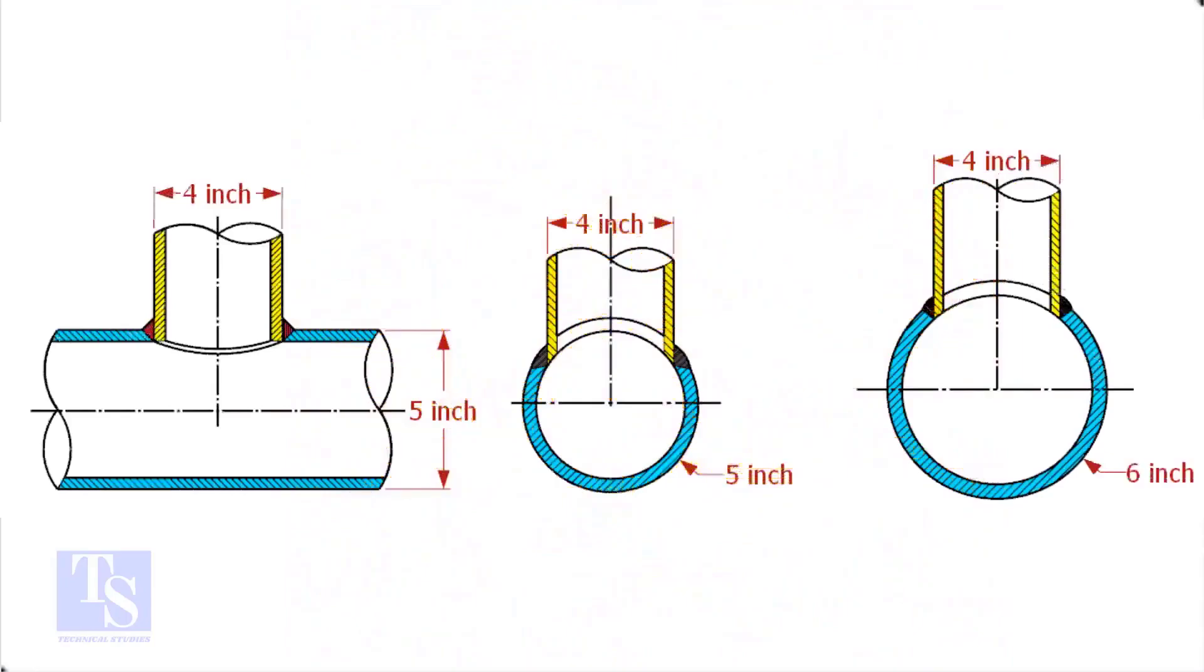In the case of stub-in connections, the branch pipe size is one or more units less than the header size. Suppose both the header and the branch size are the same, a stub-in connection is not possible.